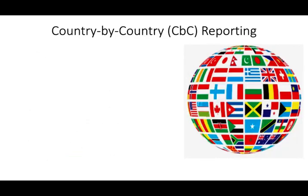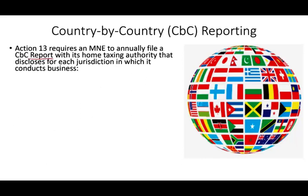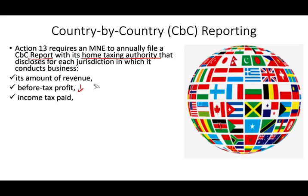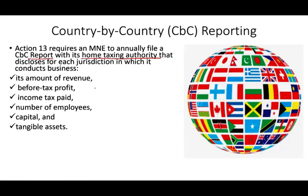So what do you have to report? It requires the multinational to annually file a report with their home tax authorities disclosing, for each jurisdiction in which they conduct business: the amount of revenue, the before-tax profit, and how much taxes were paid. If you're reporting a lot of revenues but low before-tax profit, or paying only 3% in taxes, you might be questioned. Additionally, you must report the number of employees, the capital employed, and your tangible assets.